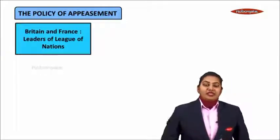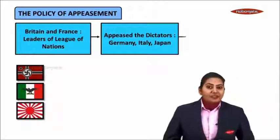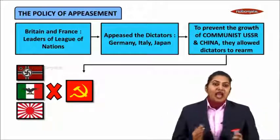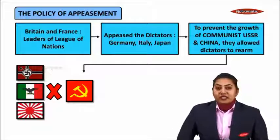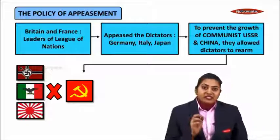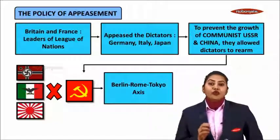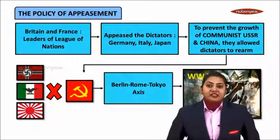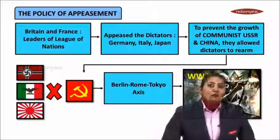Britain and France, the leaders of the League of Nations, had appeased dictators like Germany, Italy and Japan in order to prevent the growth of communist USSR in Europe and communist China in Asia. They had allowed the dictators to rearm because these dictators had signed an anti-communist pact called the Berlin-Rome-Tokyo Axis. It is this Berlin-Rome-Tokyo Axis which led to a Second World War, and hence the anticipations of Britain and France were proved wrong. Thank you so much.